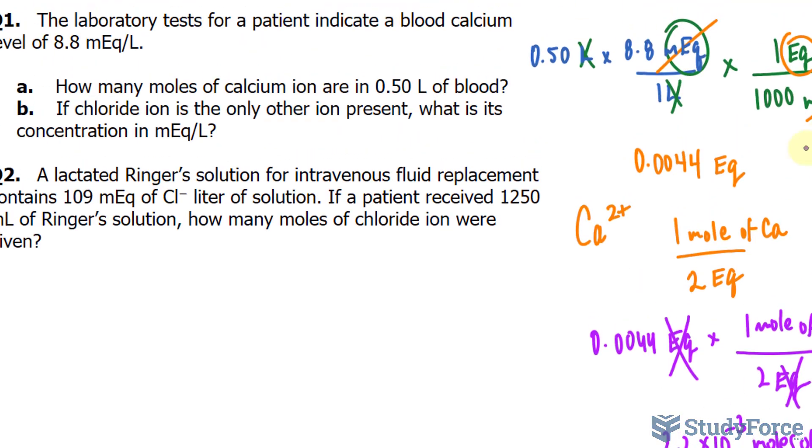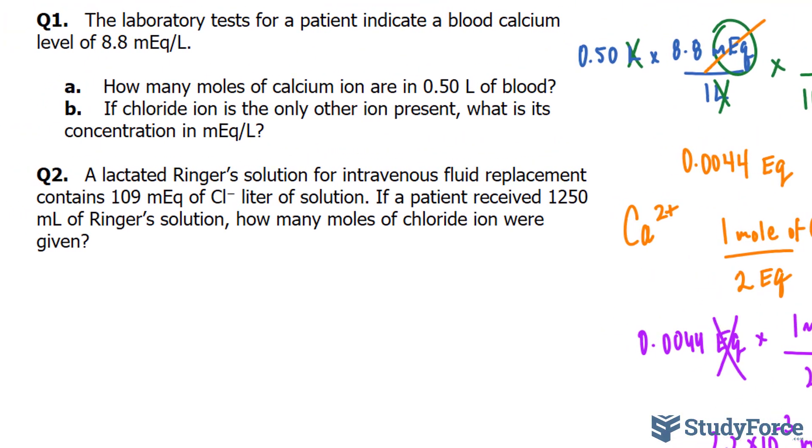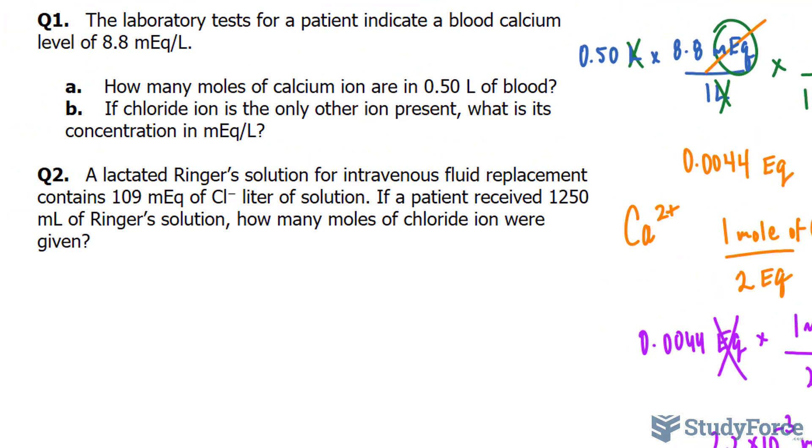Part B in the question asks, if chloride ion is the only other ion present, what is its concentration in milliequivalents per liter? Now, if the concentration of calcium is 8.8, as given in the question, then the concentration of chlorine must be 8.8 as well to balance the charges. So, we can conclude that this is 8.8 milliequivalents per liter.